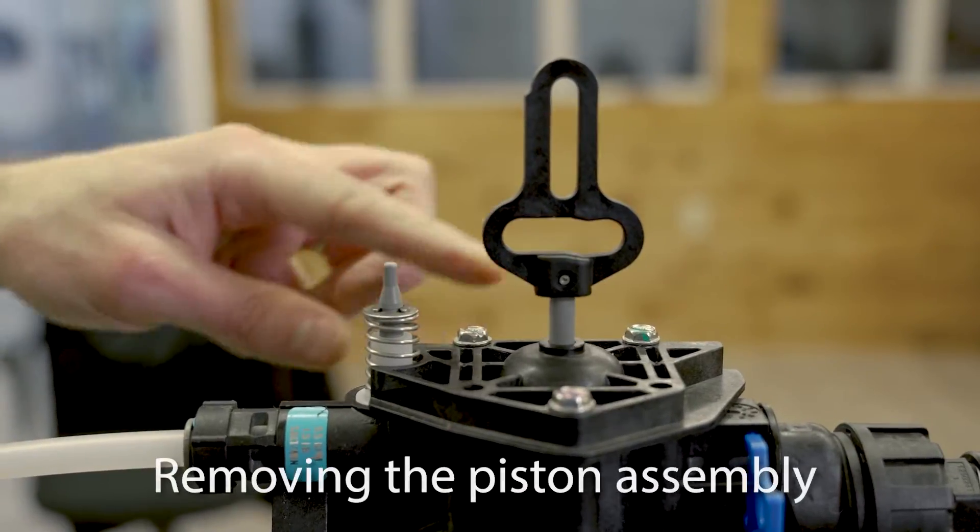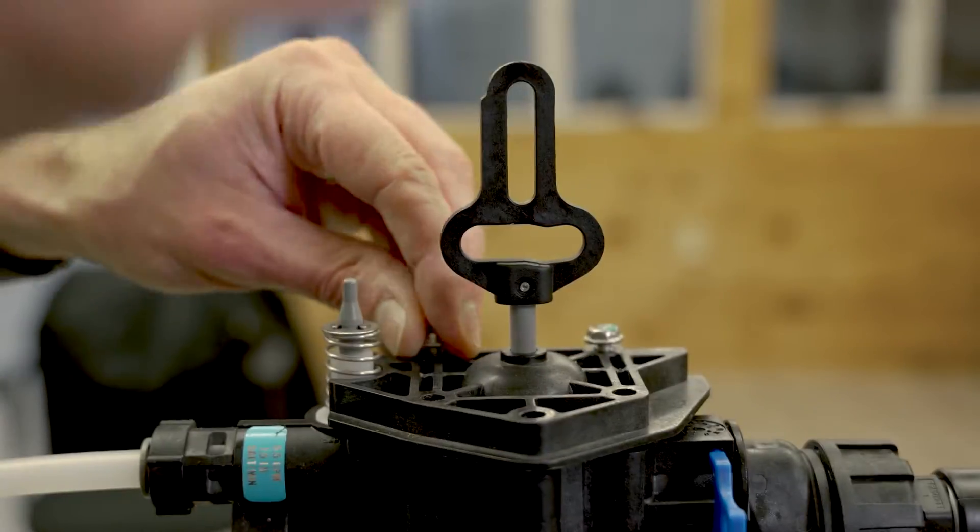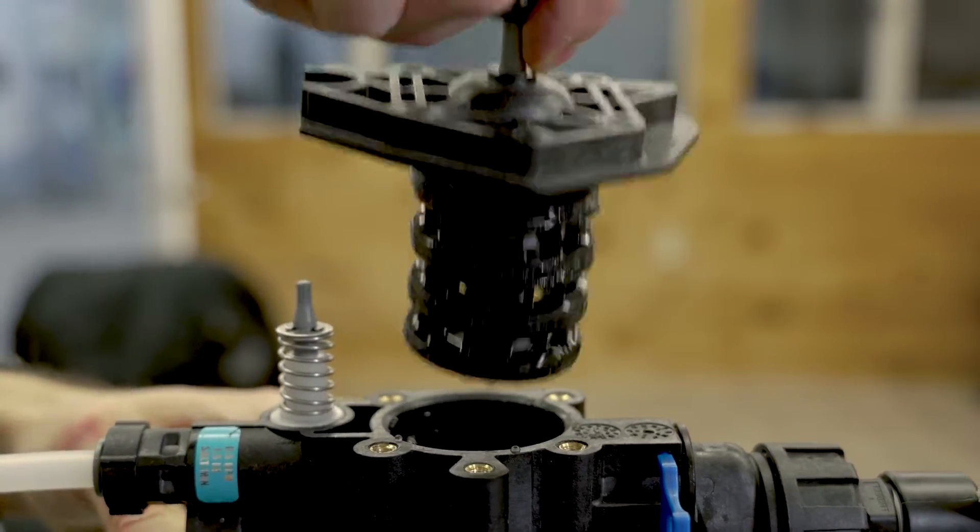Next we just have three more screws to remove. Then you can just pull the piston assembly straight up and out.